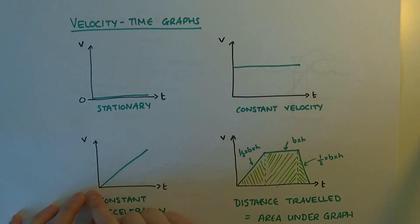A straight diagonal line, the velocity is increasing, which would be acceleration.